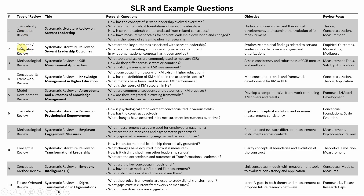The next one is a thematic integrative review. In this case, it's a systematic literature review on servant leadership outcomes — that is, how servant leadership relates to other constructs or other variables, or how it influences other variables.